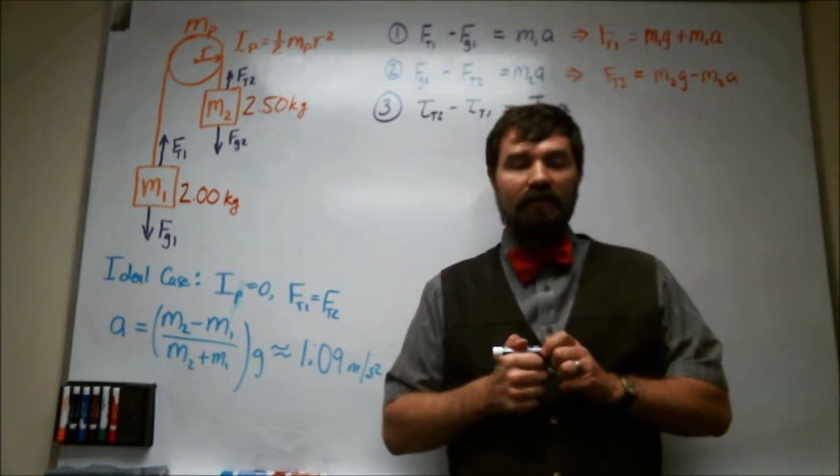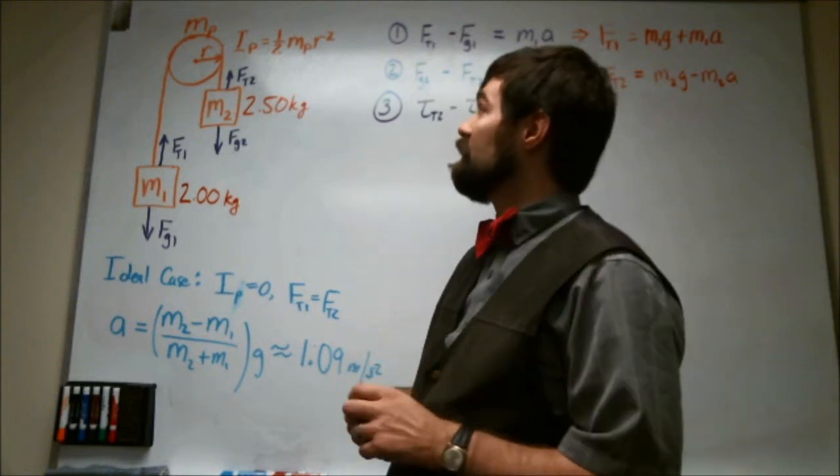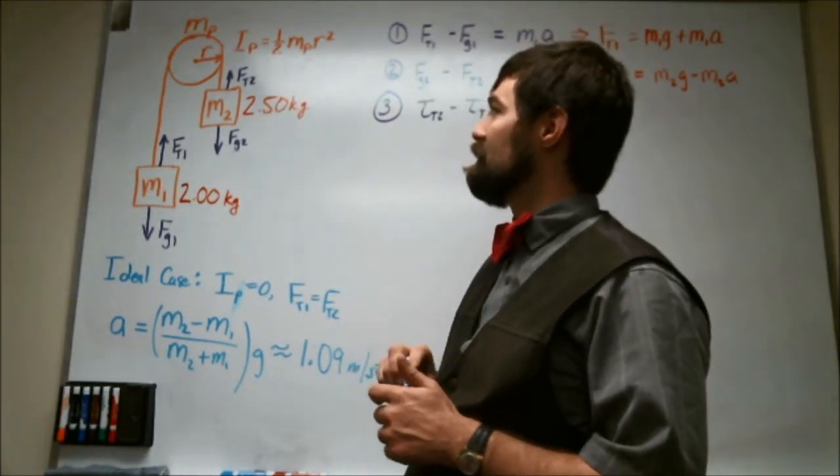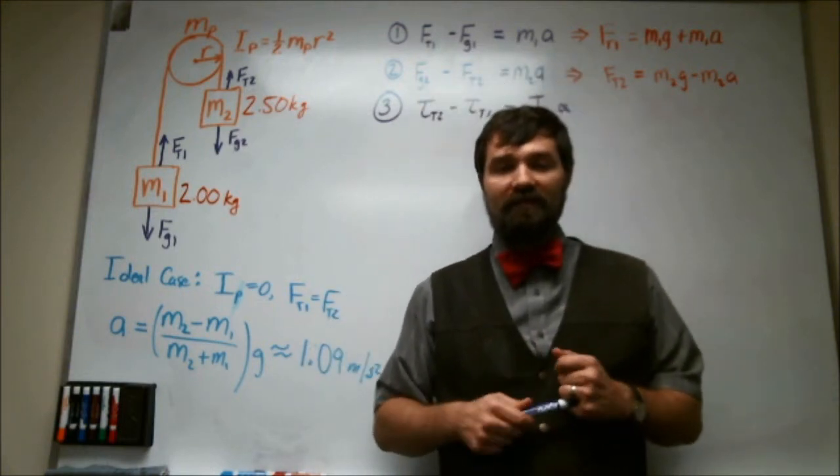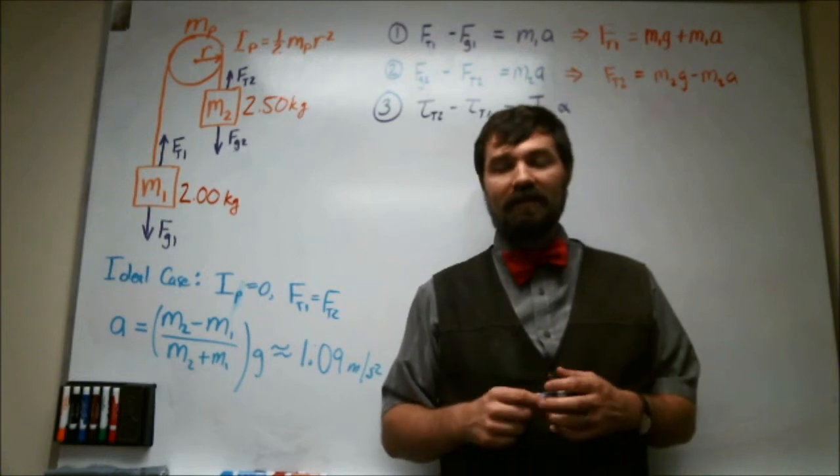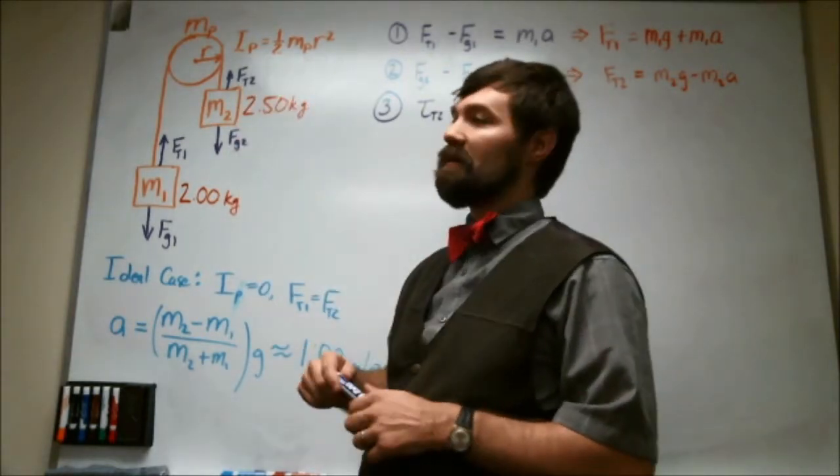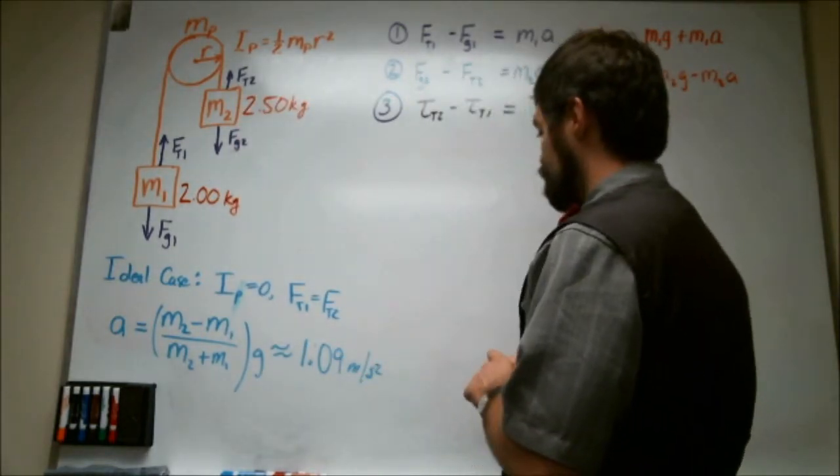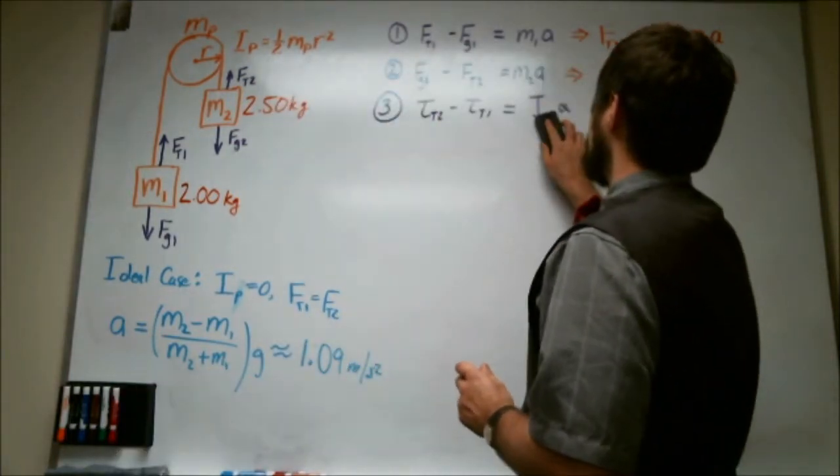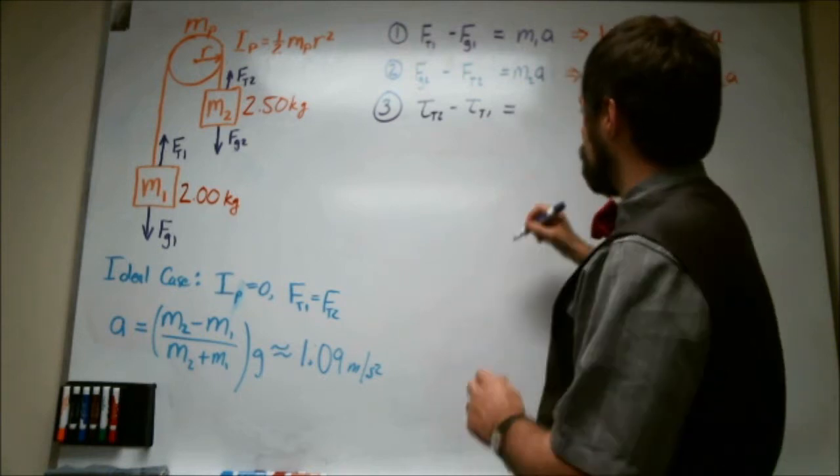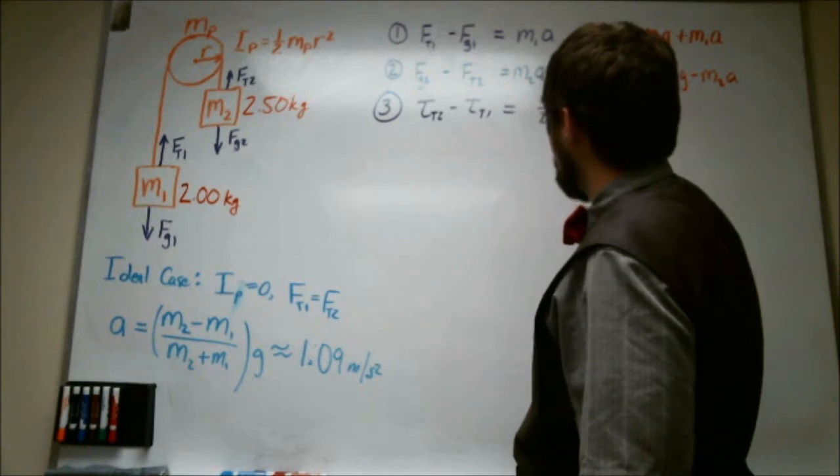So that gets us our third equation. Now, we should probably look up here and notice that the pulley has a moment of inertia which is similar to that of a solid disk. And so we have an equation for that moment of inertia. It is one half times the mass of the pulley times the pulley's radius squared. So this equation really can say one half mass of the pulley,